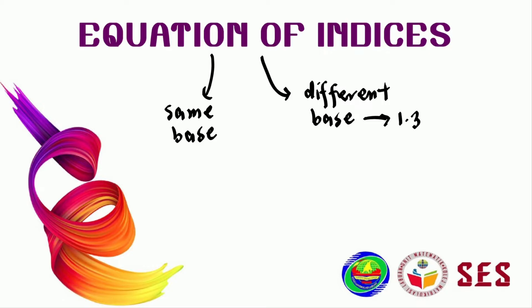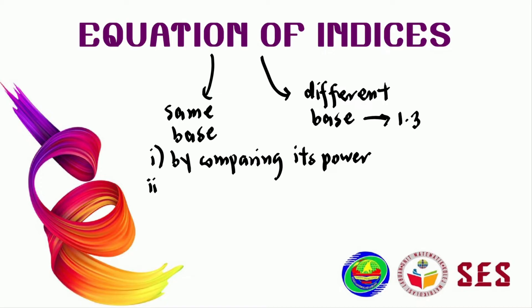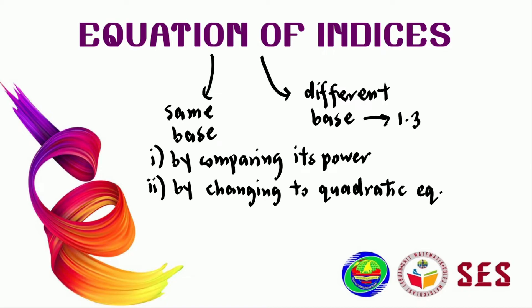Focusing on equations with the same base, to solve this type of equation we are going to use two methods. The first method is by comparing its power, and the second method is by changing it into a quadratic equation.